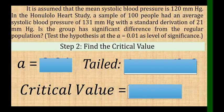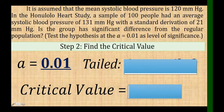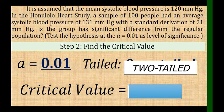For Step 2, determine the alpha. The alpha is 0.01. Since our Ha states 'there is a significant difference,' it is non-directional, so the tail is two-tailed. For the critical value, use the critical region table for testing hypothesis using the Z-test. For two-tailed and 0.01, the critical value is 2.575.